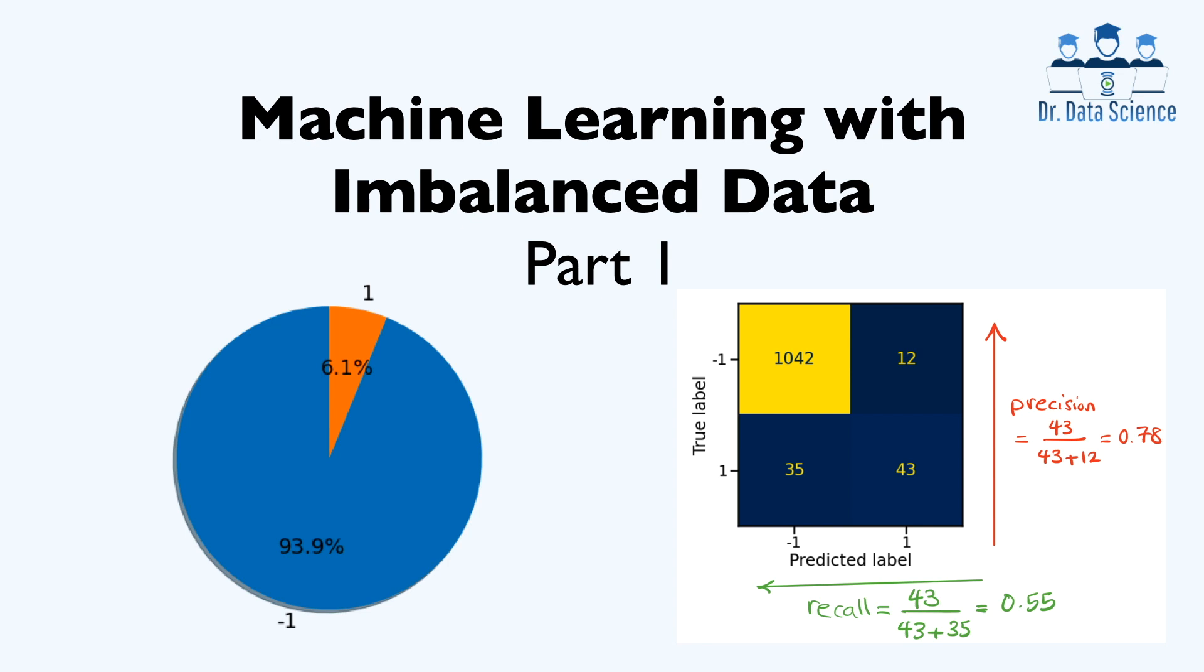The class imbalance problem has been encountered in multiple areas, such as computer vision, bioinformatics, fraud detection, and medical diagnosis, to name just a few. Imbalanced data substantially compromises the learning process, since most of the standard machine learning algorithms expect balanced class distribution or an equal misclassification cost.